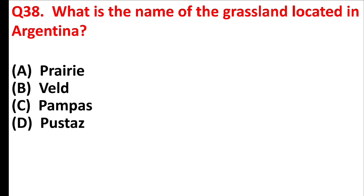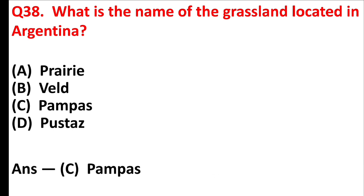What is the name of the grassland located in Argentina? Answer is option C, Pampas.